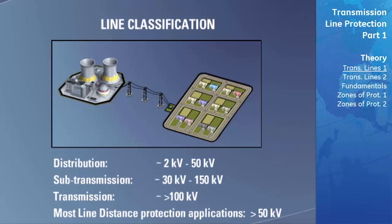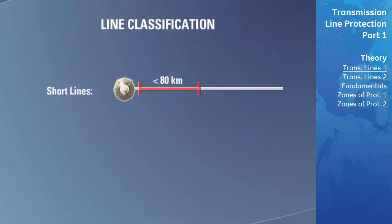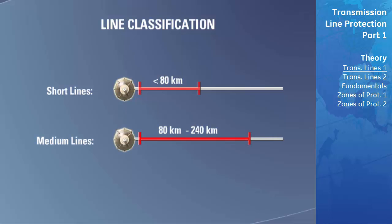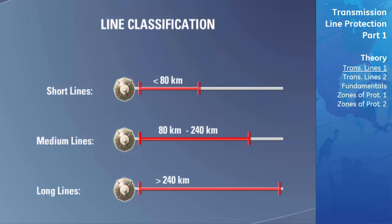The lengths of transmission lines have also been classified into three categories. Short transmission lines are ones that are less than 80 kilometers in length. Medium transmission lines are ones that are roughly between 80 kilometers to 240 kilometers. Long transmission lines are ones that are greater than 240 kilometers in length.